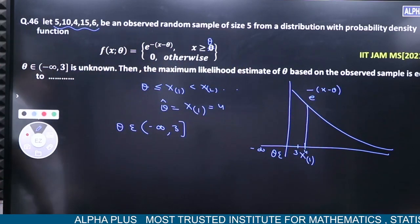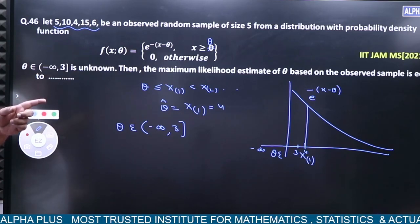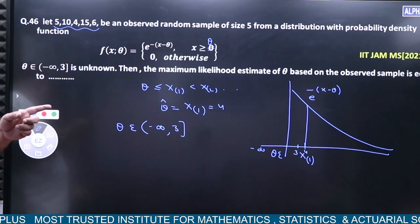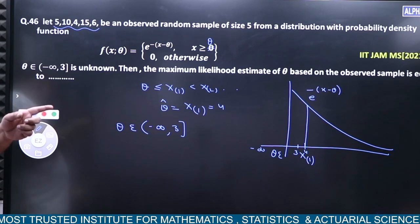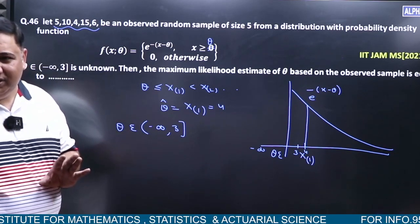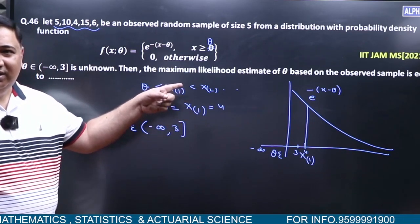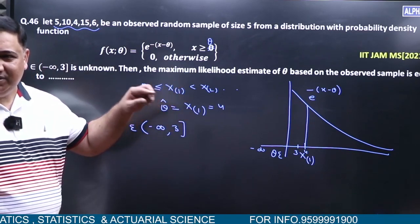Maximum likelihood exists. The smallest value, but theta can't go beyond that. Theta equals 3 is the maximum likelihood estimation.